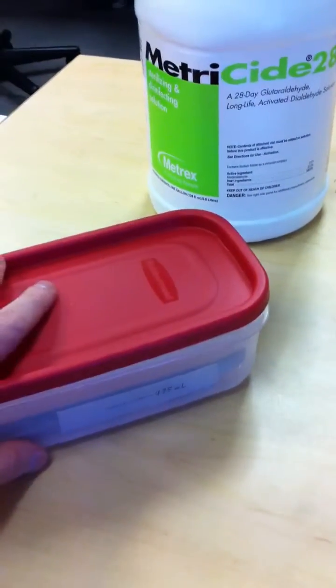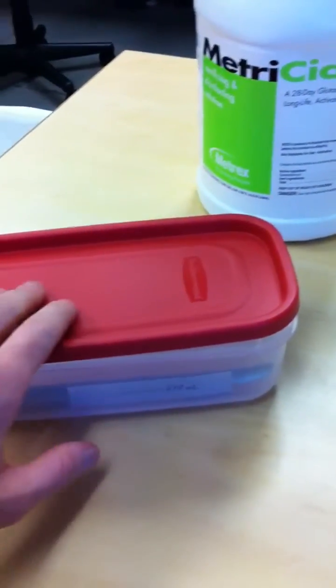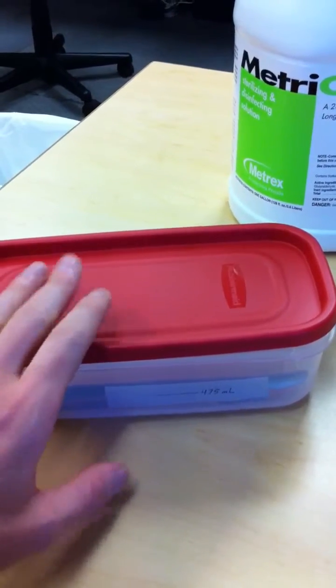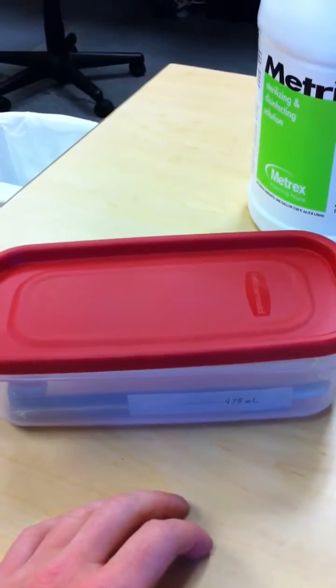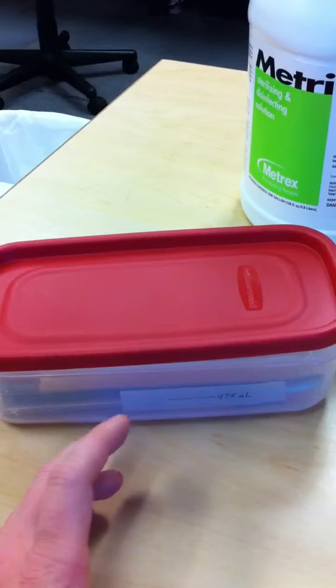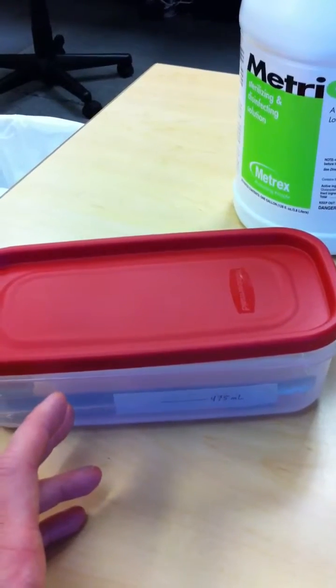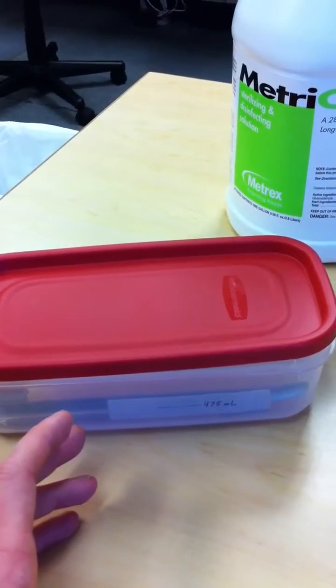Once you've done that, don't dispose of the solution. With a piece of tape on the top of this Tupperware, write the date that you activated the solution. It is good for 28 days after this and can be used for repeated cleanings.